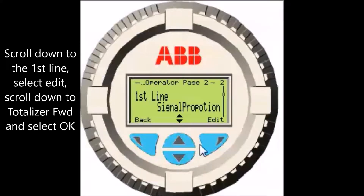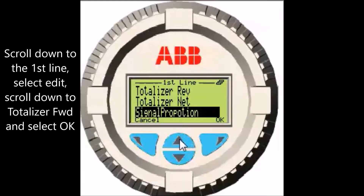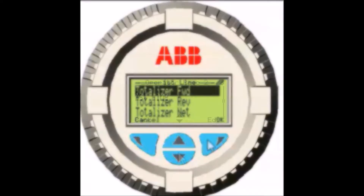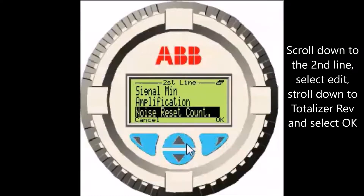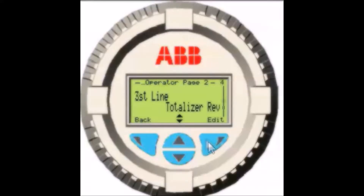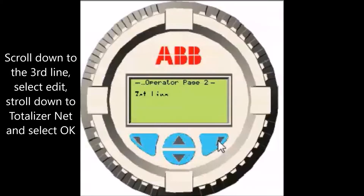Scroll down to the first line, select edit, scroll down to totalizer forward and select OK. Scroll down to the second line, select edit, scroll down to totalizer reverse and select OK. Scroll down to the third line, select edit, scroll down to totalizer net and select OK.